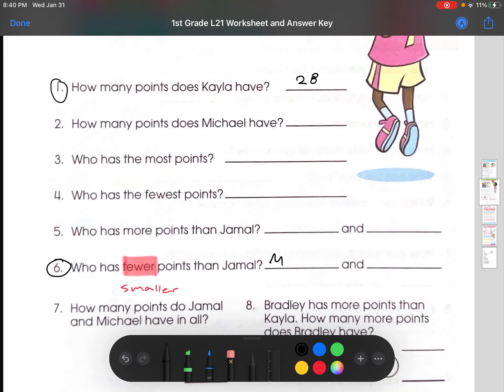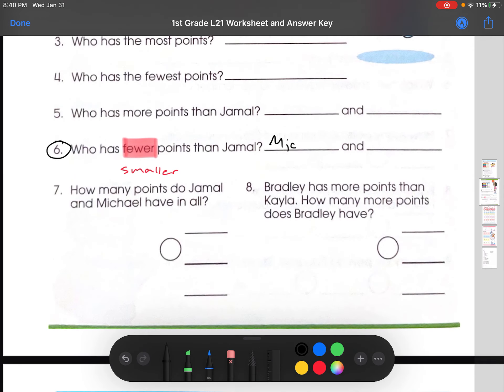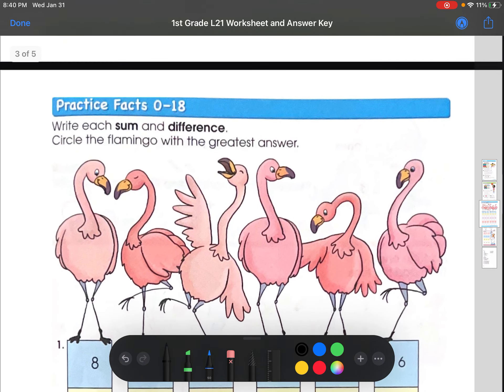So, you can just write their names right here. Michael and Kayla. Just like that.